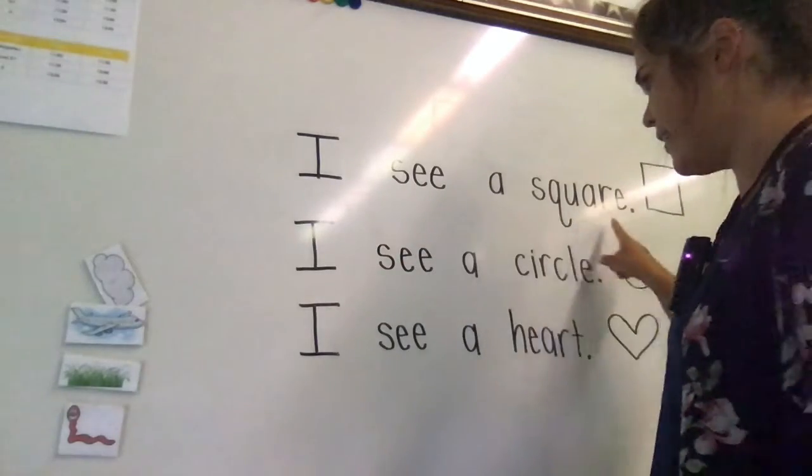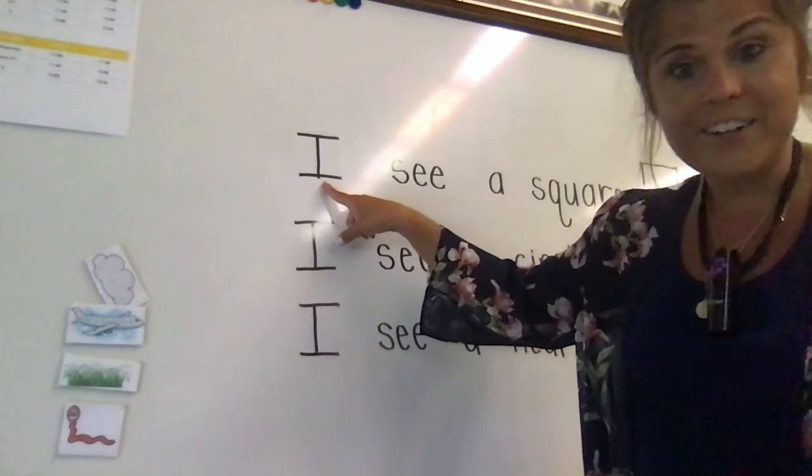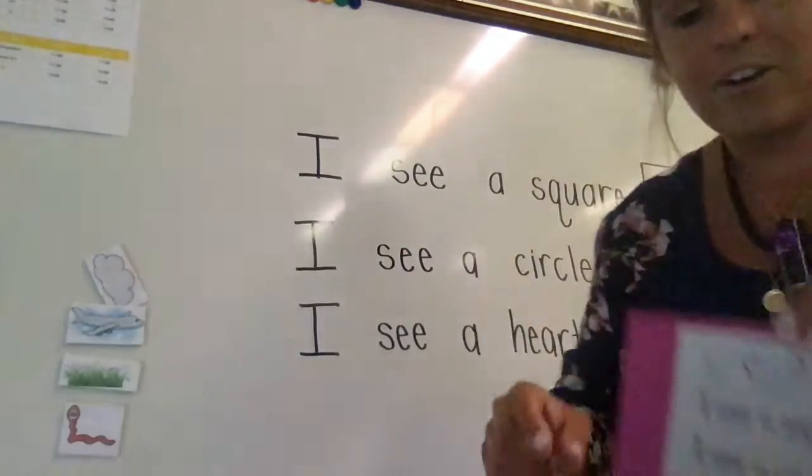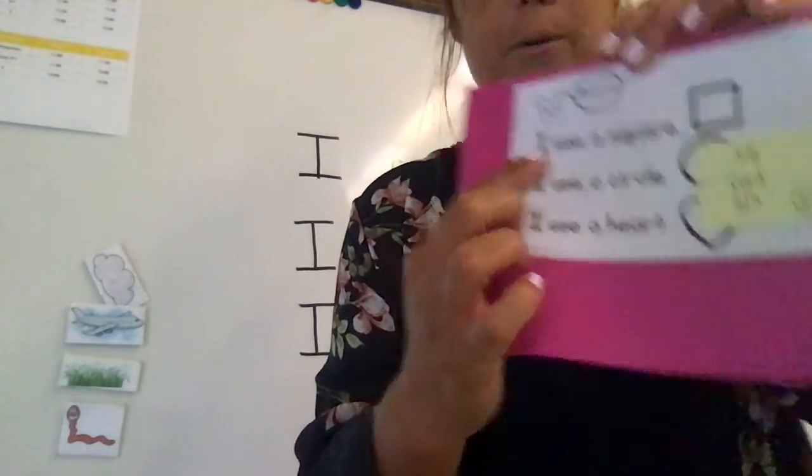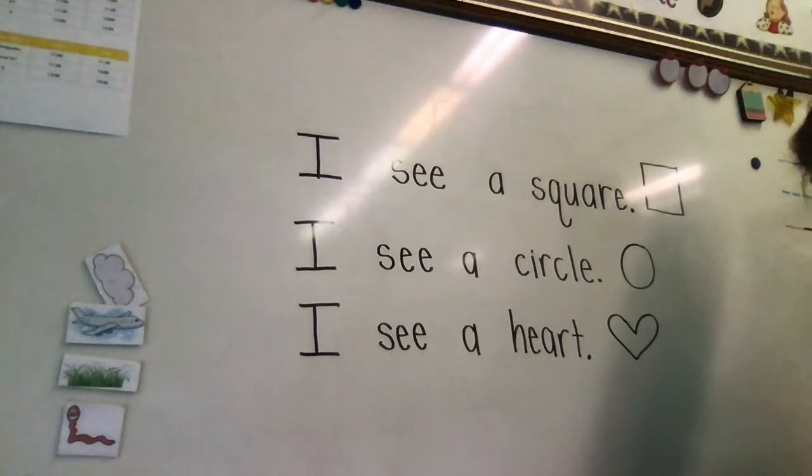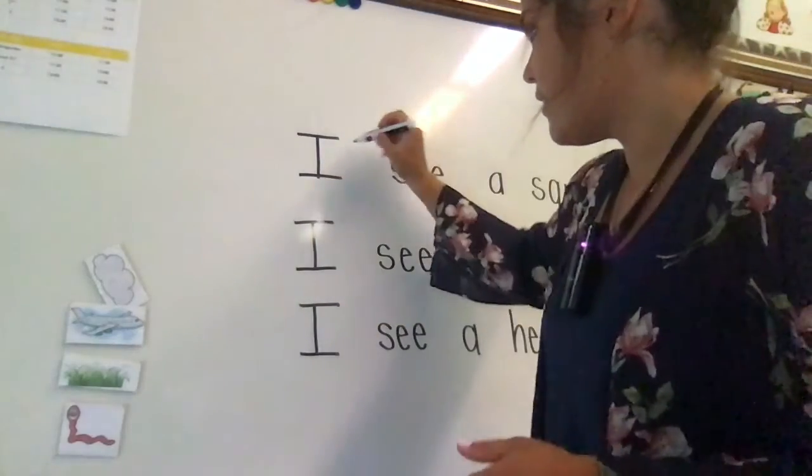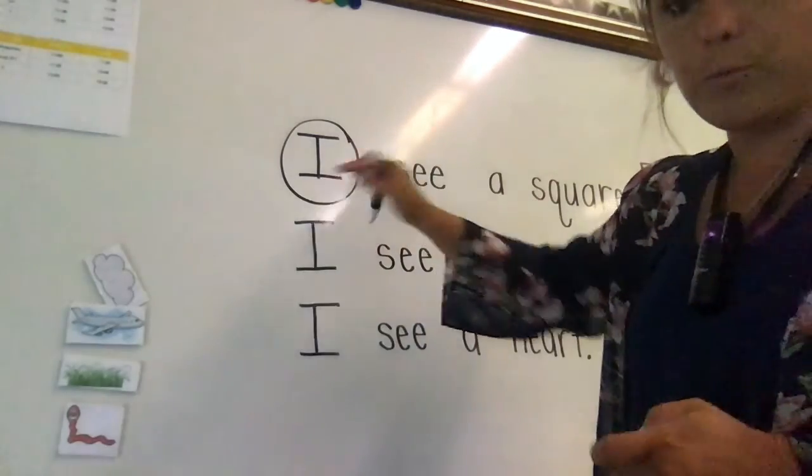Where do you see I here? If you guys are pointing here, then you are correct. On your paper, I see it right here. Sight word I. Wherever you see I in that first sentence, you are going to take your pencil and circle it. Okay? Because that's our sight word of the week.